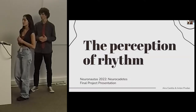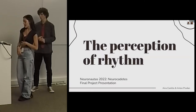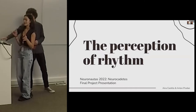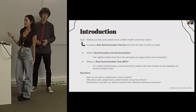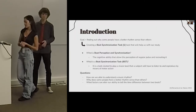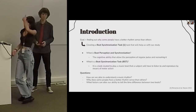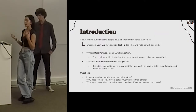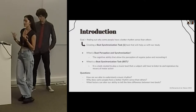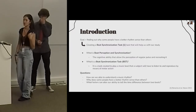For that, we had to create our own beat synchronization task, which would help us with our study. Before getting into the experiments, we need to know what beat synchronization and beat perception is. It is a cognitive ability that allows the perception of regular pulses and recreating them. We defined a beat synchronization task as a task where music is played and the subject listens to it and recreates the beat while the music is playing.